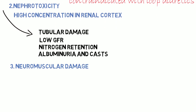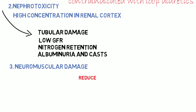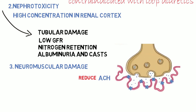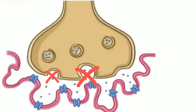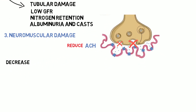Neuromuscular damage is another distinctive adverse effect. All aminoglycosides reduce acetylcholine release from the motor nerve endings. They interfere with mobilization of centrally located synaptic vesicles, fuse with the terminal membrane, and ultimately decrease the sensitivity of the muscle end plate to acetylcholine.